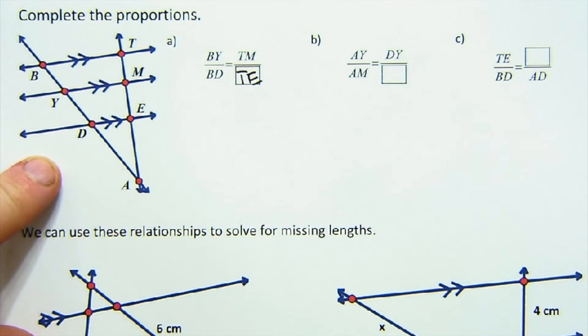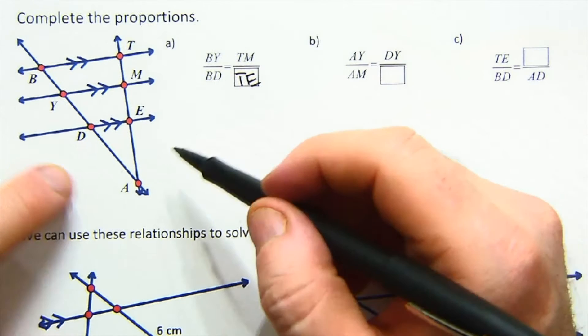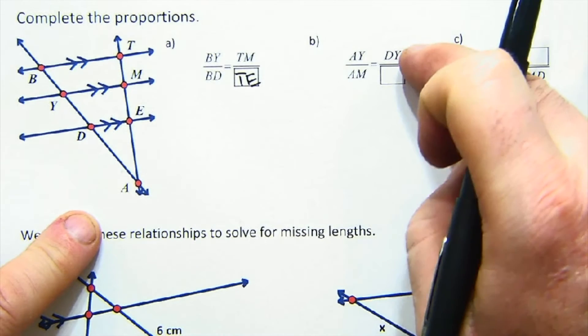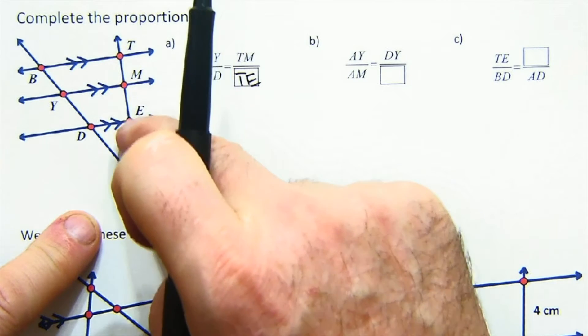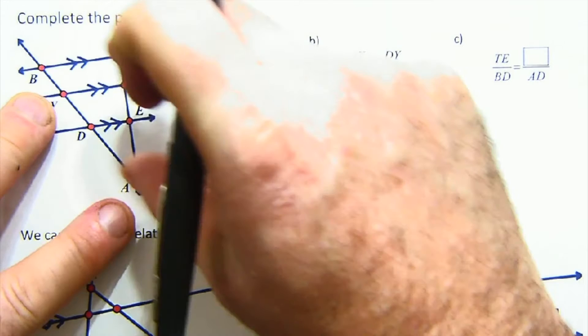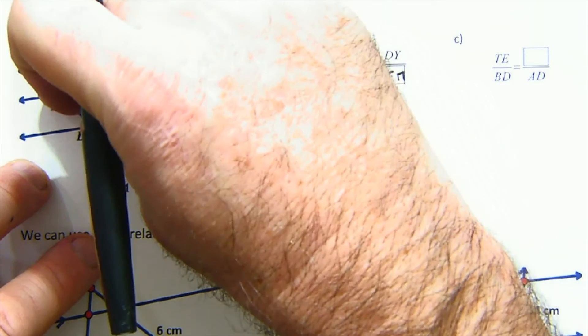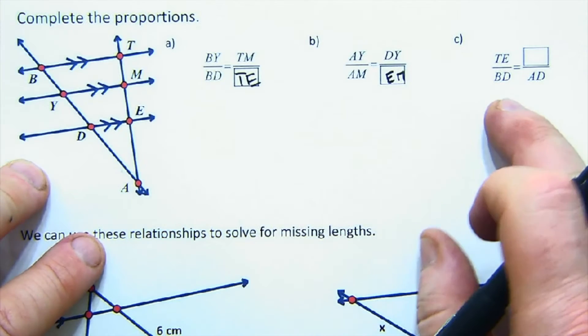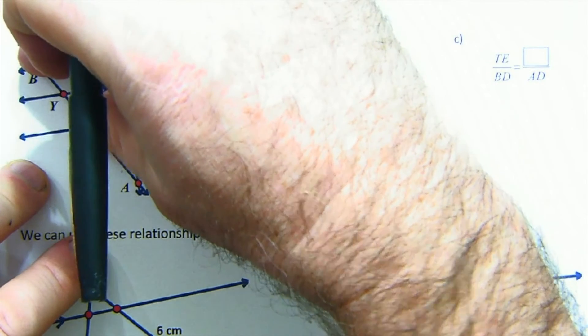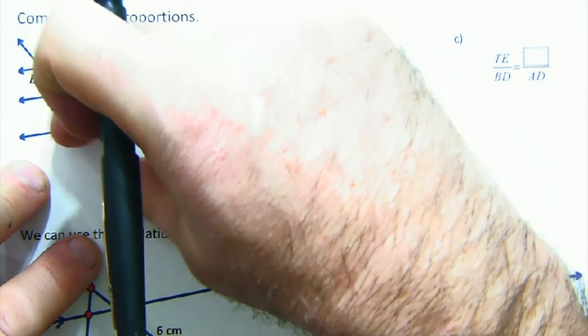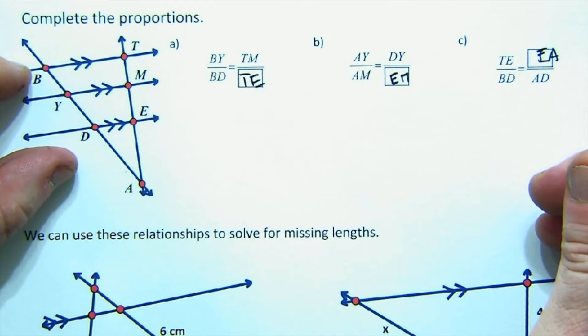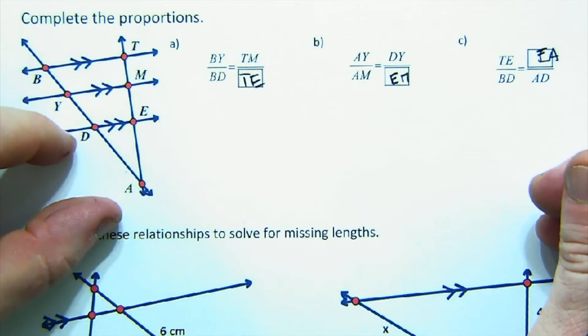So this piece to the whole piece, so TM is to TE, and I just follow the same pattern. BY to BD, TN to TE, very simple. This says AY. Let's see, AY, where's AY? This whole thing AY is to AN as DY is to EN. Let's see if that makes sense. This piece relates to AM as DY, this piece, would relate to EN, this piece.